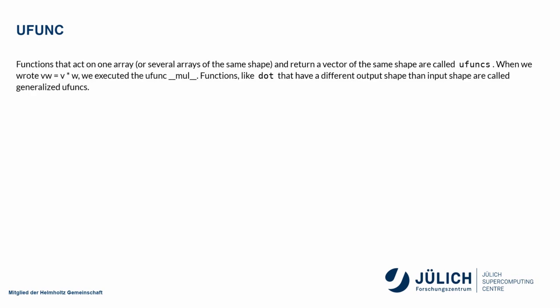Ufuncs are functions that act on one or more arrays of the same shape, or at least they need to be broadcastable, and return a vector of the same shape. As I said, when we multiplied those two, we executed the ufunc mul, which you can define in any way you want.